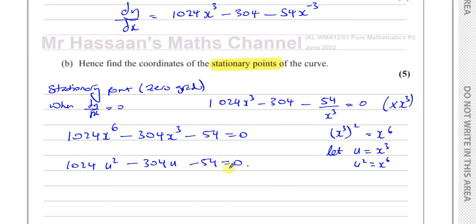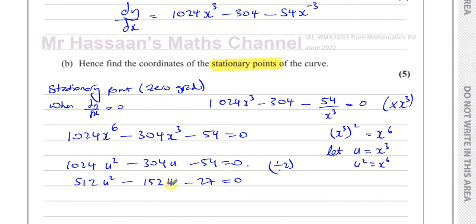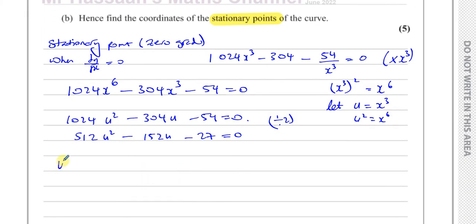Now I need to factorize and solve this. To make the numbers easier, I can divide by 2, giving 512u squared minus 152u minus 27 equals 0. I don't think it simplifies further — it's not divisible by 3. We could try to factorize it, but finding two numbers that multiply to 512 times negative 27 and add to negative 152 would be a hassle, so I'd suggest using the quadratic formula.